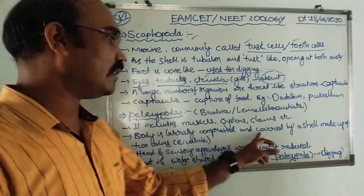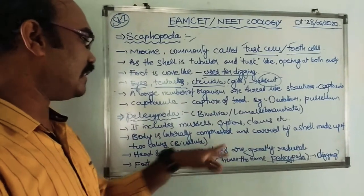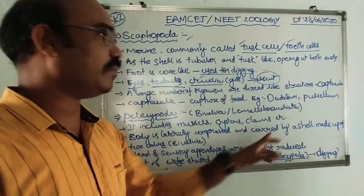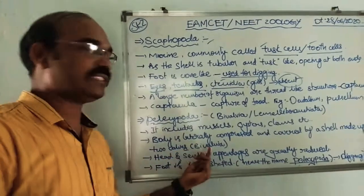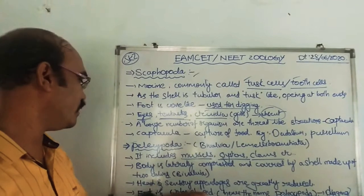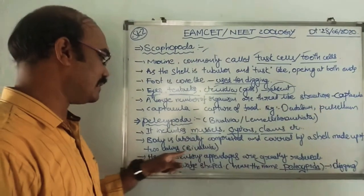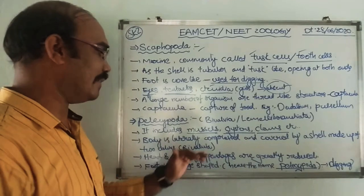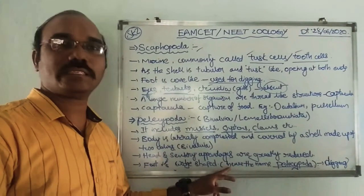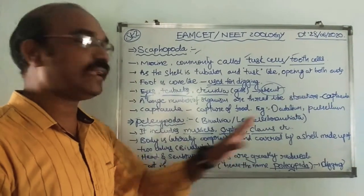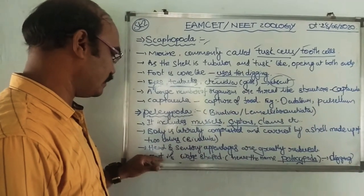The body is laterally compressed and covered by a shell made up of two valves — that is why they are called bivalves. Head and sensory appendages are greatly reduced in Pelecypoda organisms.